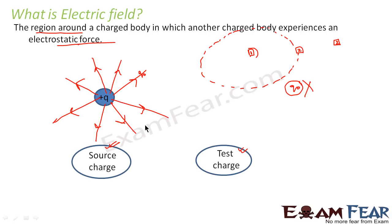The maximum region till where the electric field exists is known as the range. Any other particle will experience an electrostatic force only if it is within the range of the electric field — anything beyond that limit is out of range. So I hope you now understand roughly what is electric field, what is a source charge, and what is a test charge.